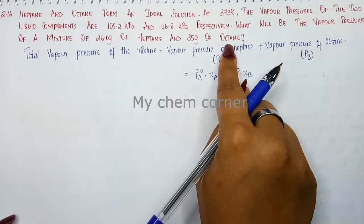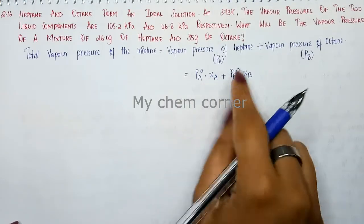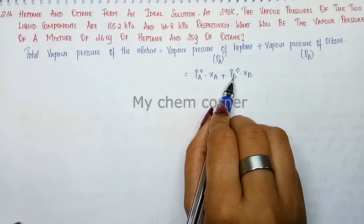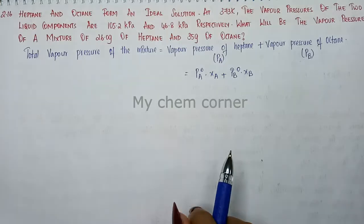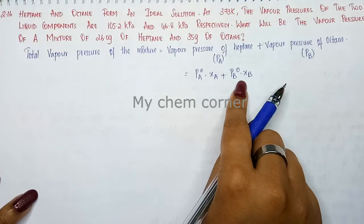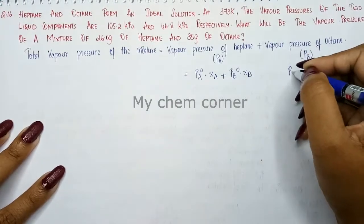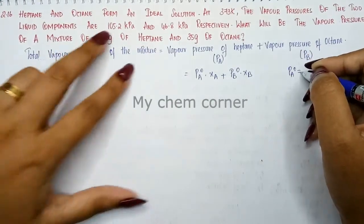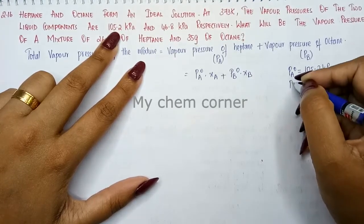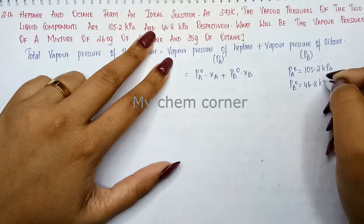PA0 and PB0 are the vapor pressures of the pure states of heptane and octane respectively. The value of PA0 is 105.2 kilopascal, and PB0 is 46.8 kilopascal.